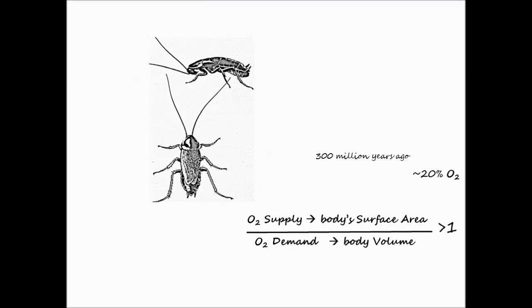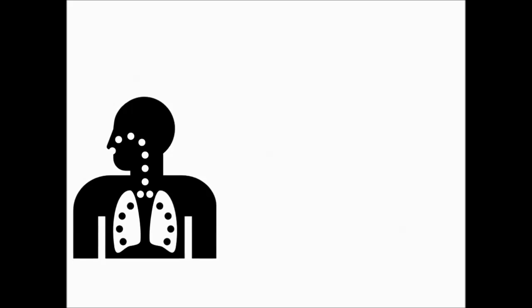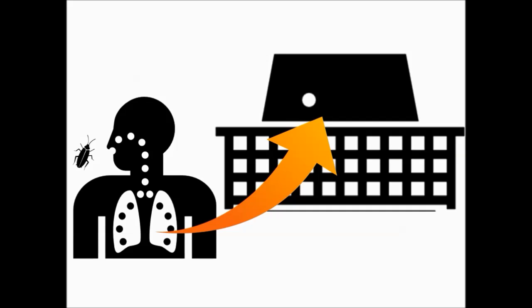Or else, atmospheric oxygen has to be higher as it was in the carboniferous period. So cockroaches were much bigger then. In the present though, bigger creatures like us need lungs which gives breathing surface area the size of half a tennis court. Cockroaches are small enough to have all the surface area they need for breathing.